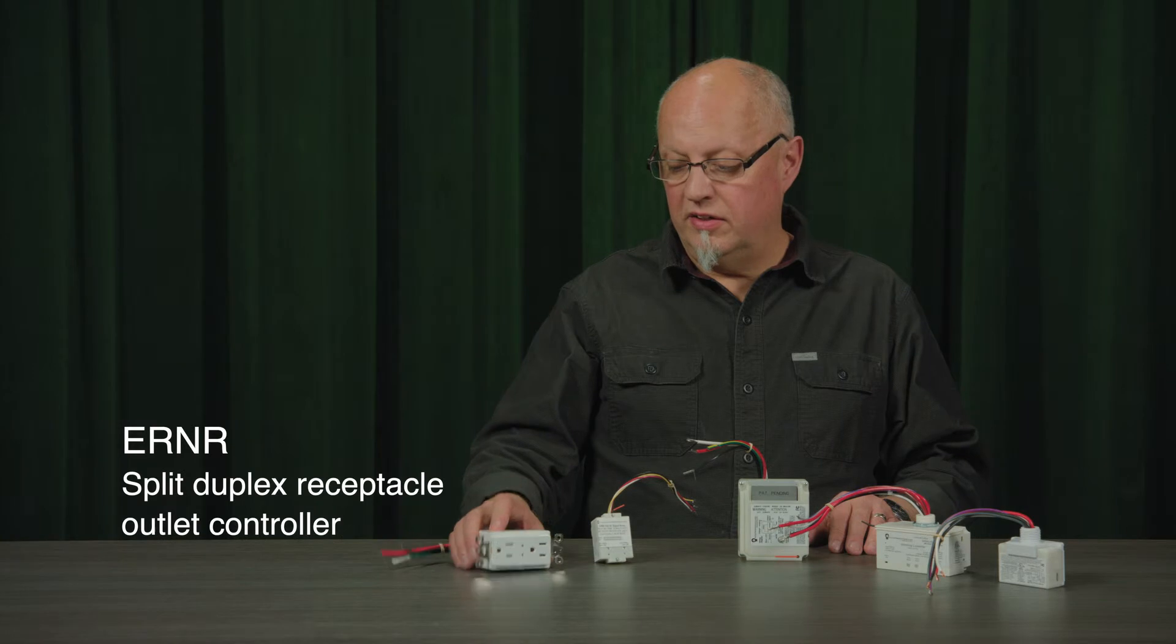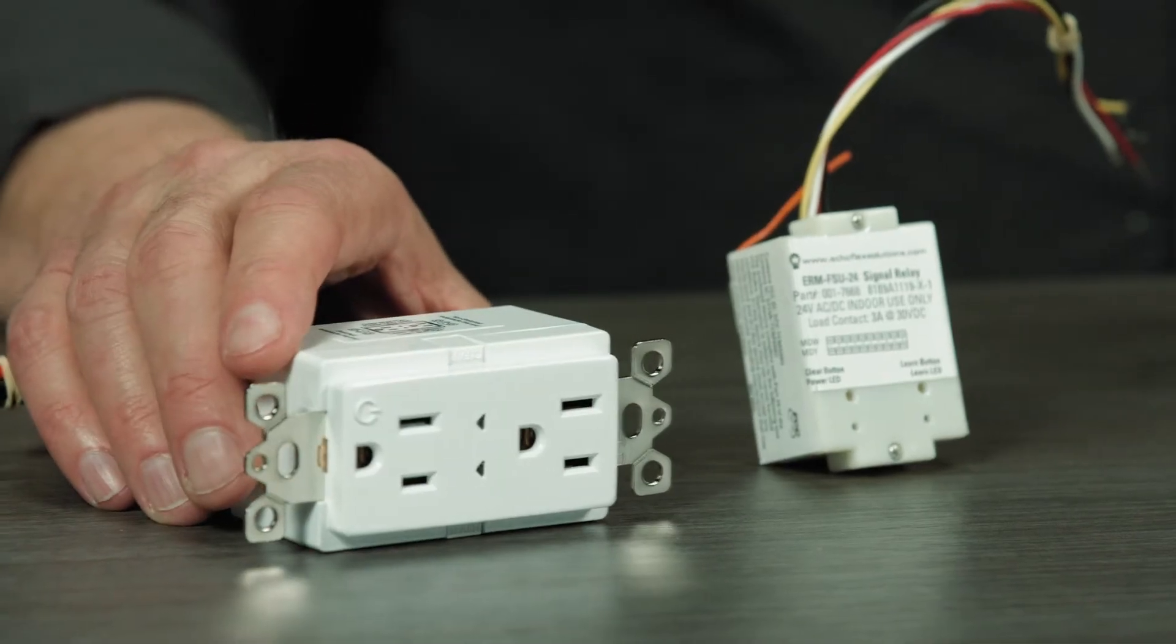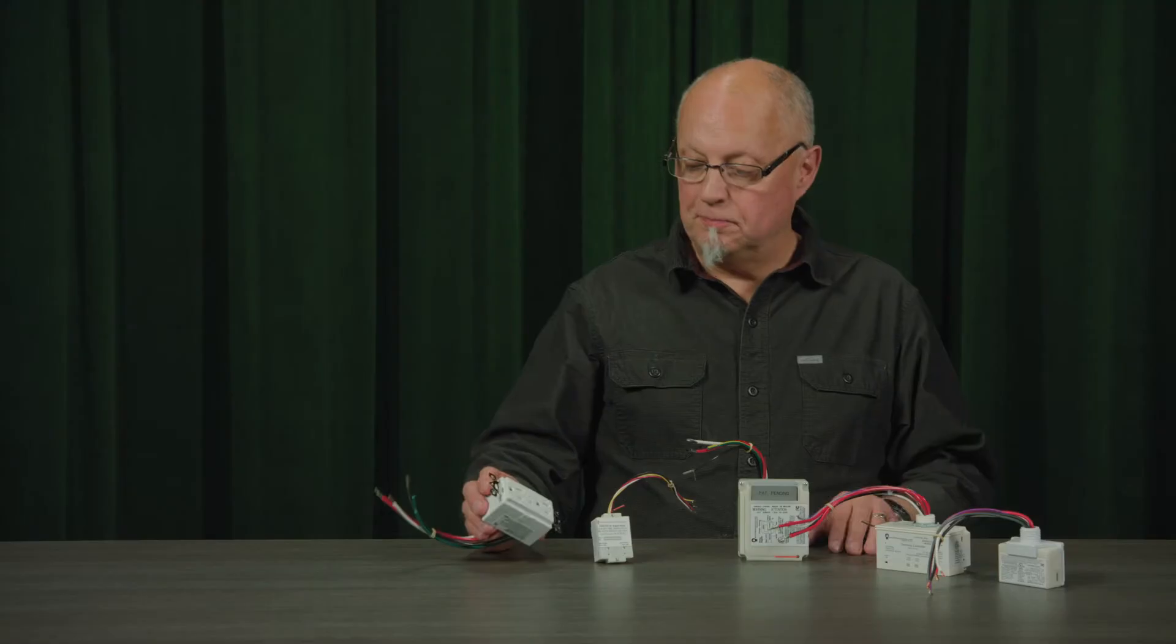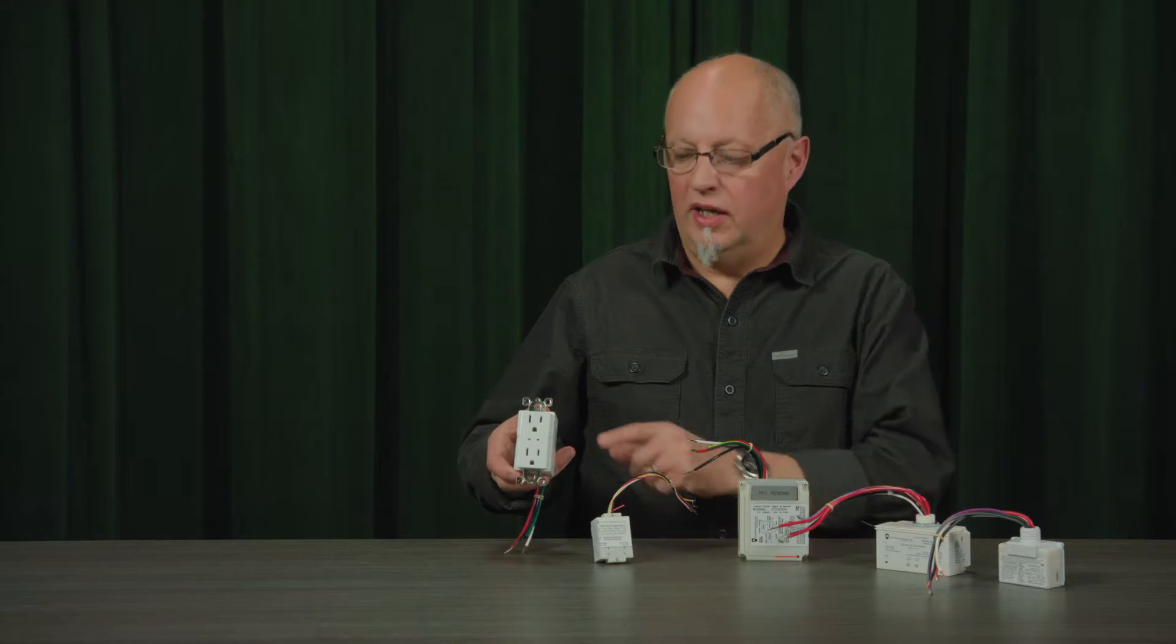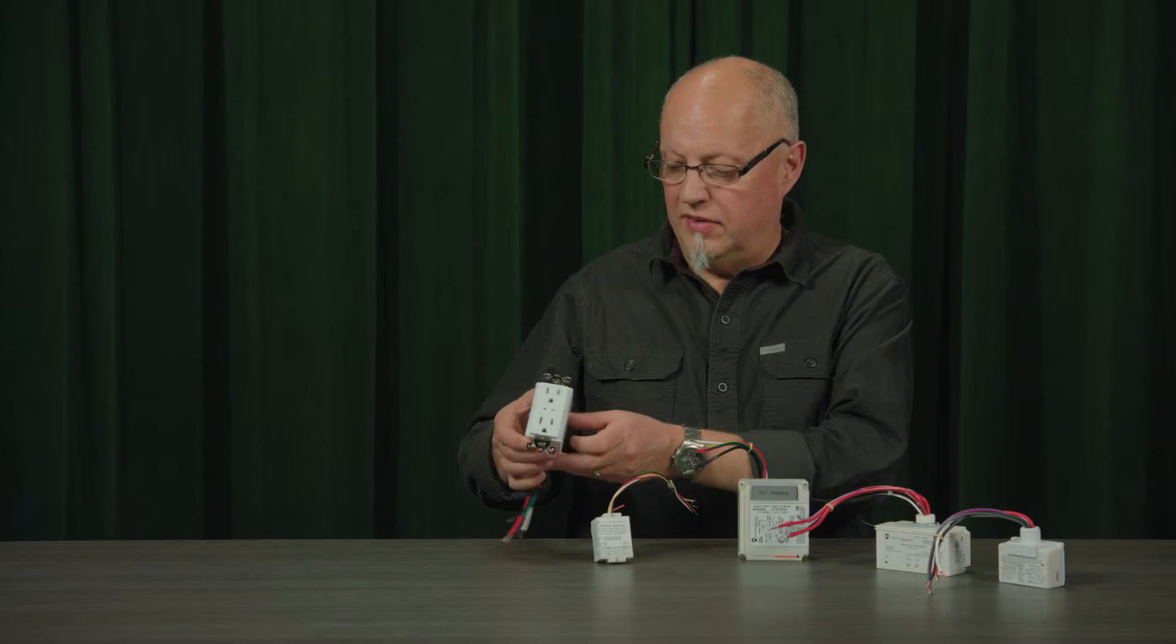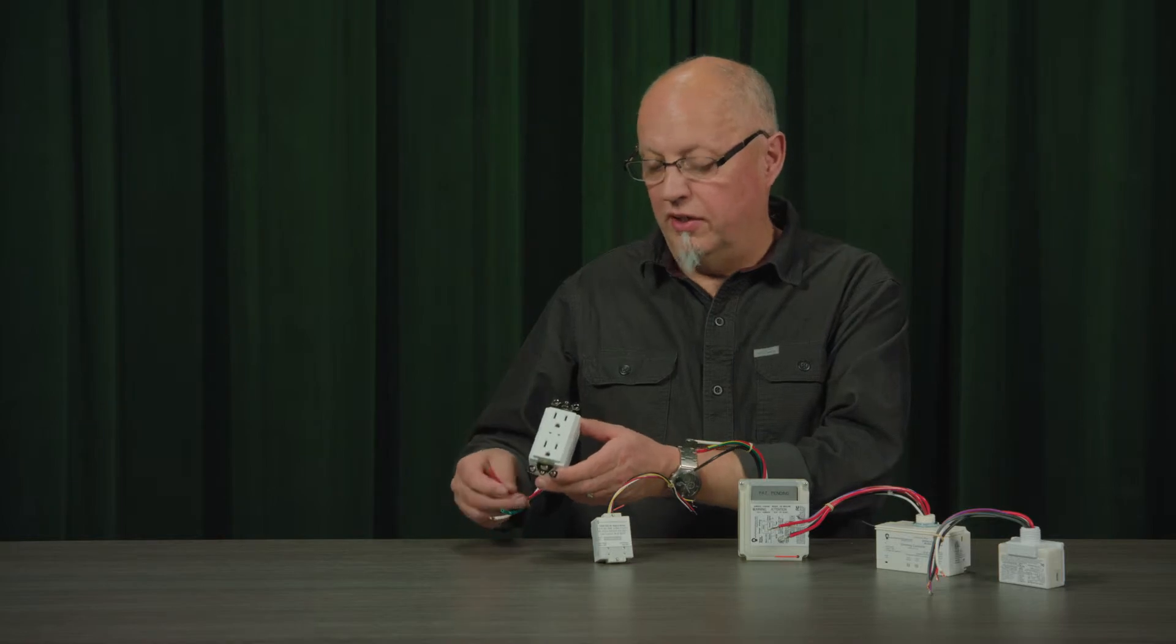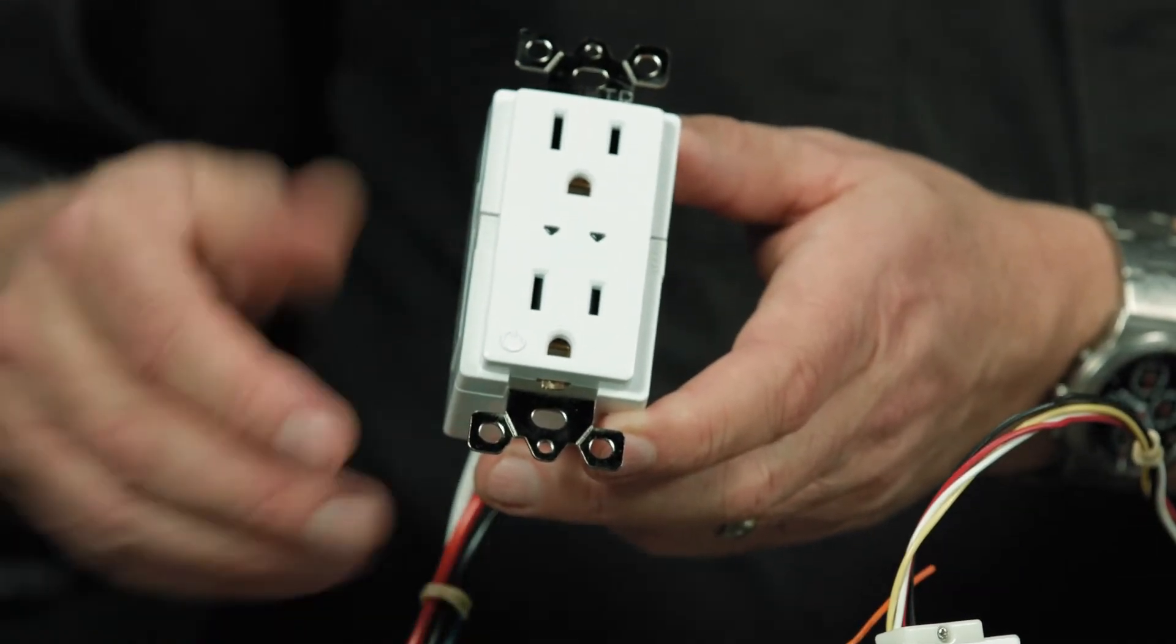And lastly here is our controlled receptacle. It is a 15 amp controlled receptacle and is split. So the top half is not controlled and the bottom half is controlled. We also have a red auxiliary wire here for connecting other non-controlled receptacles downstream, so you can control more than one receptacle.